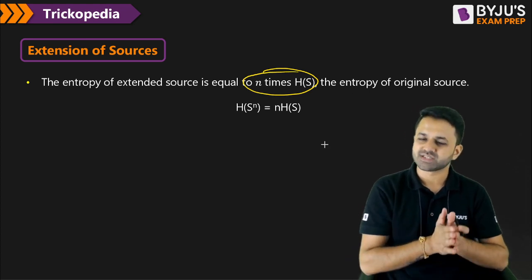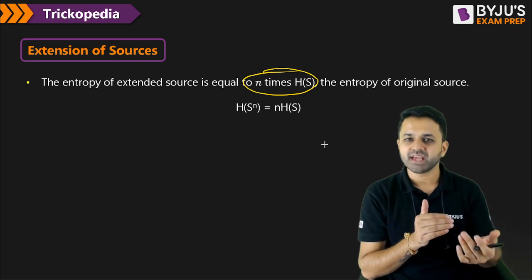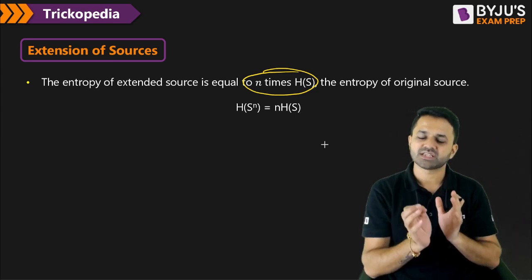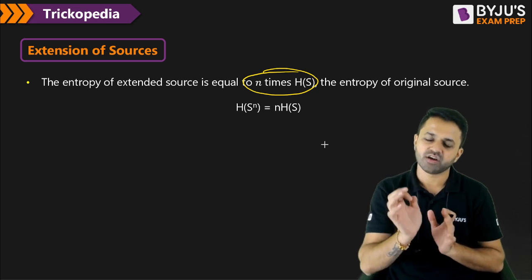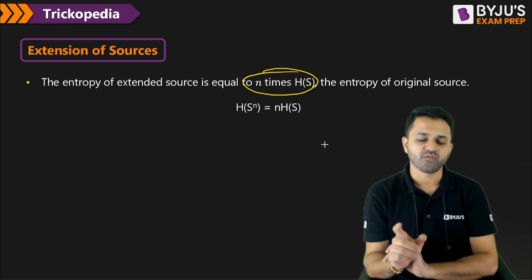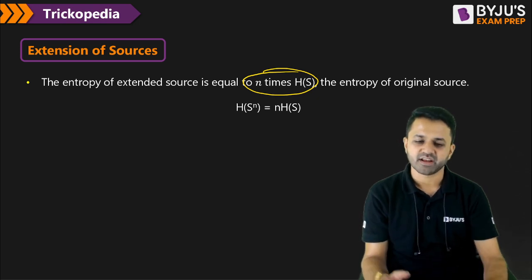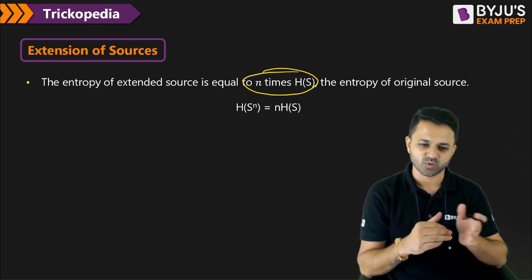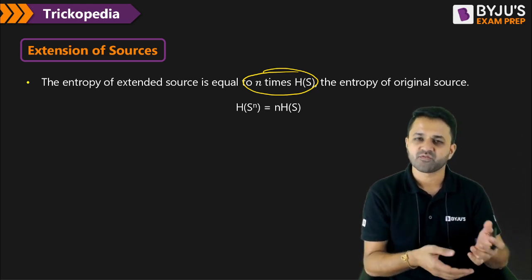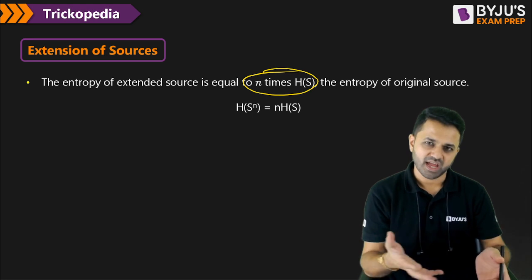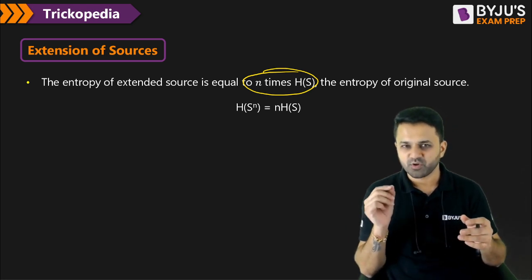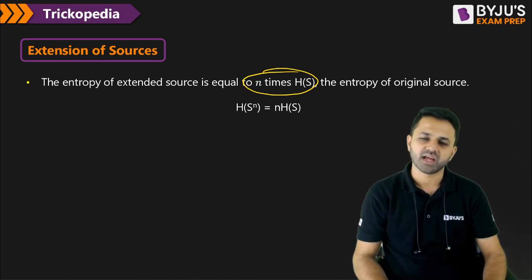The entropy of the extended source equals n times H(S). That means if there is a source S and you extend it by order n, you just need to multiply the order of the extension by the entropy of the original source. This is the trick to calculate the entropy of the extended source, and it is very helpful when questions ask you to calculate information rate and channel capacity.